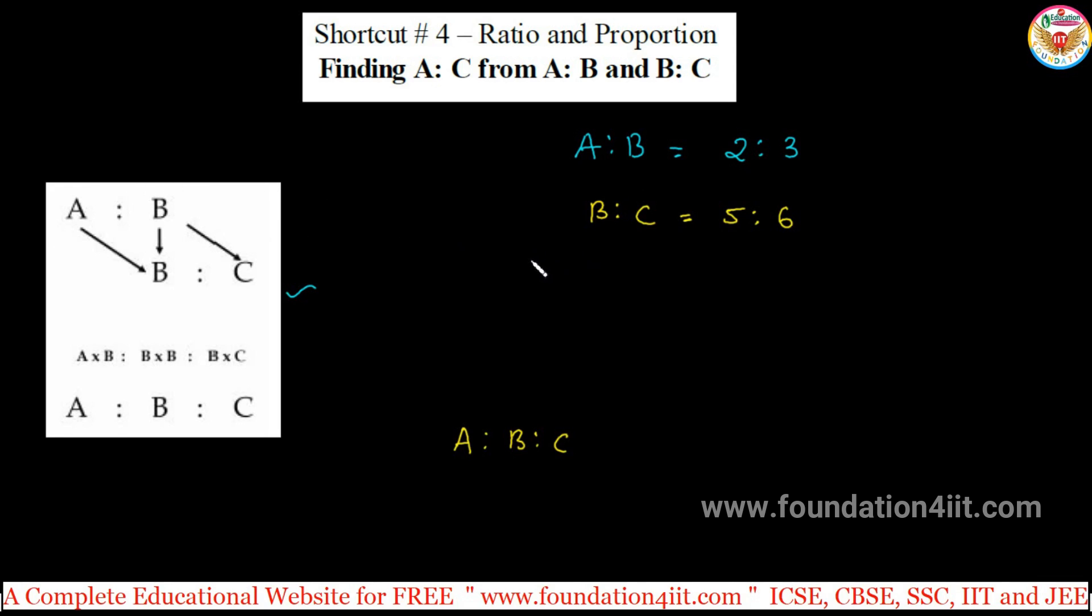If you observe A is to B, so just write 2 is to 3 and this B matching with B, 5 is to 6. After writing this, first we will multiply A into B, this type 2 and 5, crossway with multiplication. 2 into 5, that is 10.